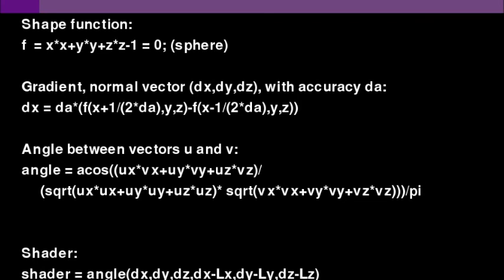Then there's the angle between vectors u and v. This is the same function as in the previous slide. And the shader is defined by the angle function with the arguments dx, dy, dz, i.e. the normal vector to the surface, and dx minus lx, dy minus ly, and dz minus lz, which is the vector to the light source. And the angle function computes the angle between these two scaling them to be between 0 and 1.